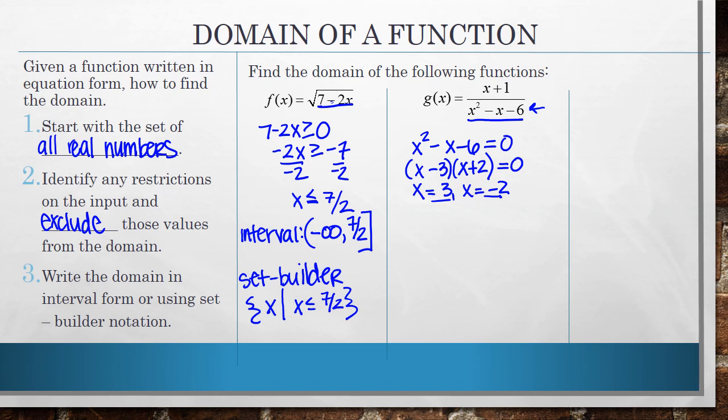When I write the domain, I can write it. I'm going to first actually write this in set builder notation. So if you were writing this in set builder notation, it's all values of x, such that x cannot equal negative 2 and x cannot equal 3. All other values of x I could plug into this function and get an actual output, except if I substitute in negative 2 or if I substitute in 3.